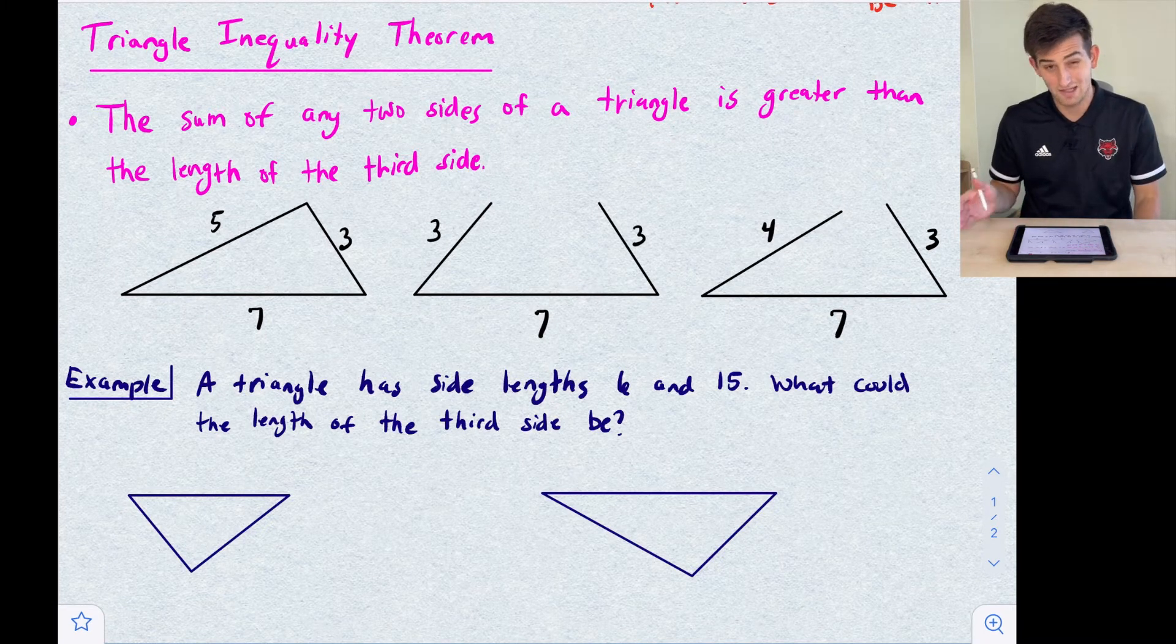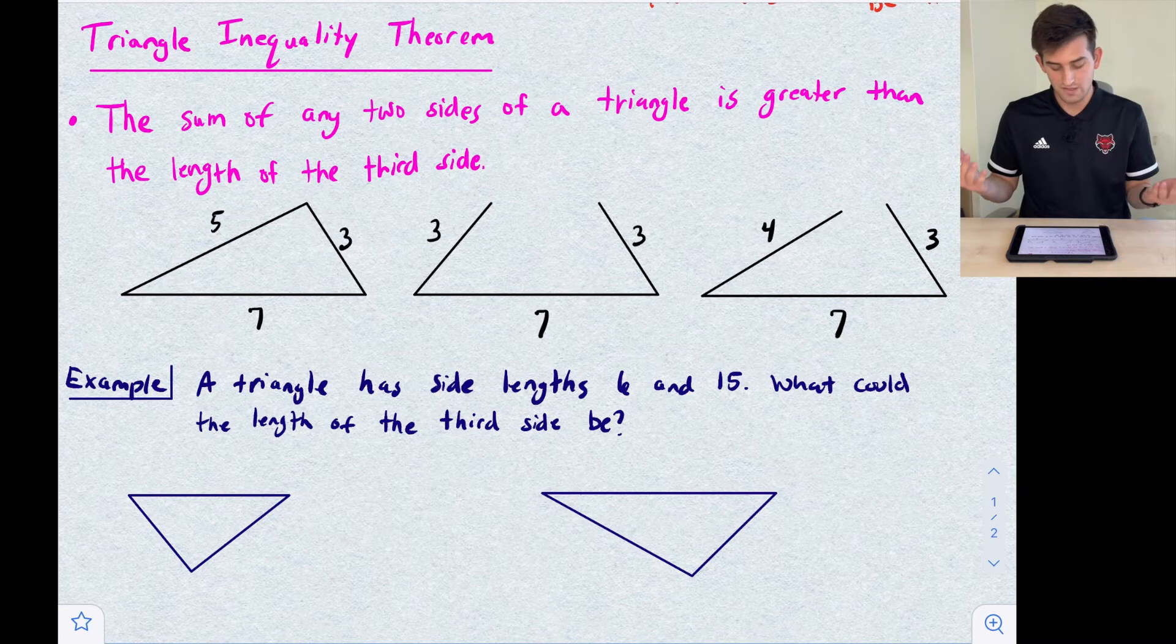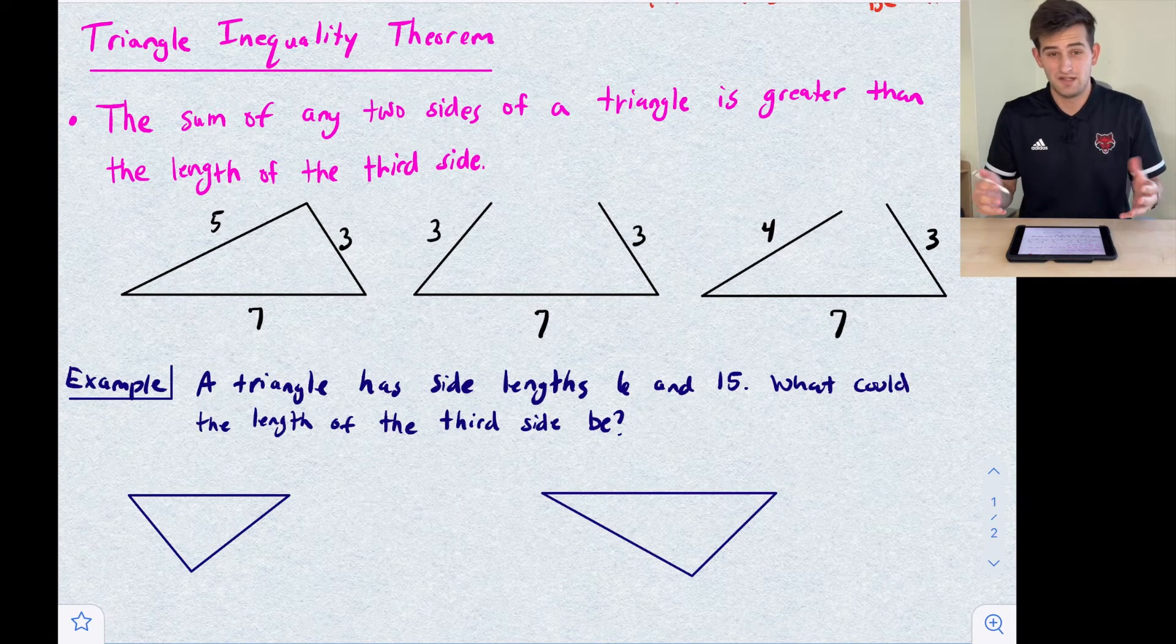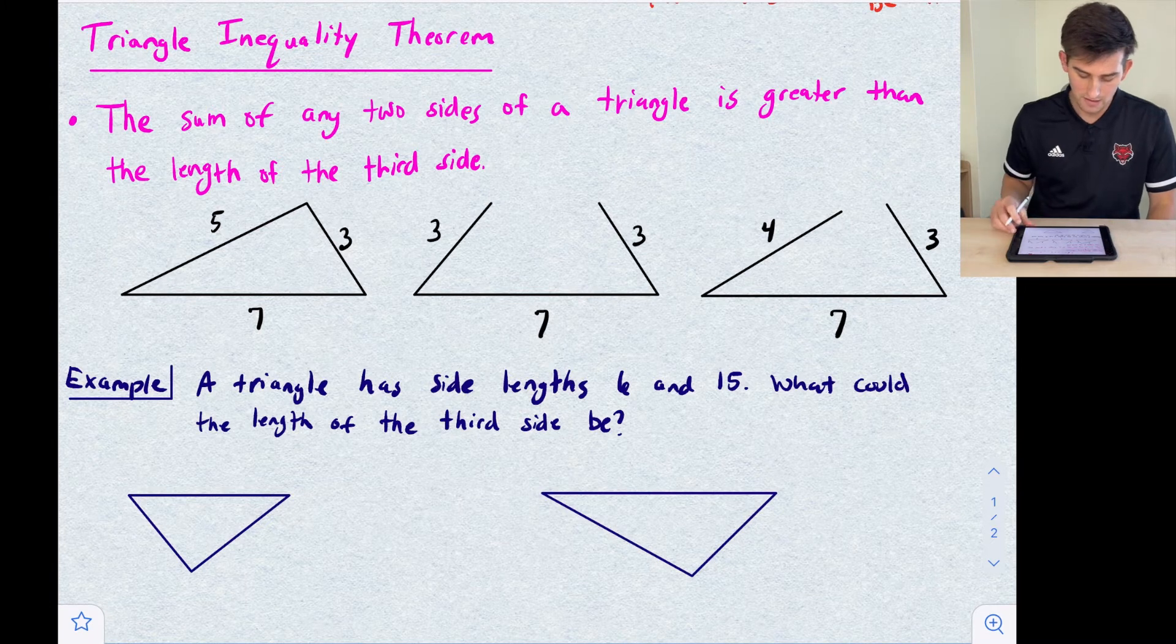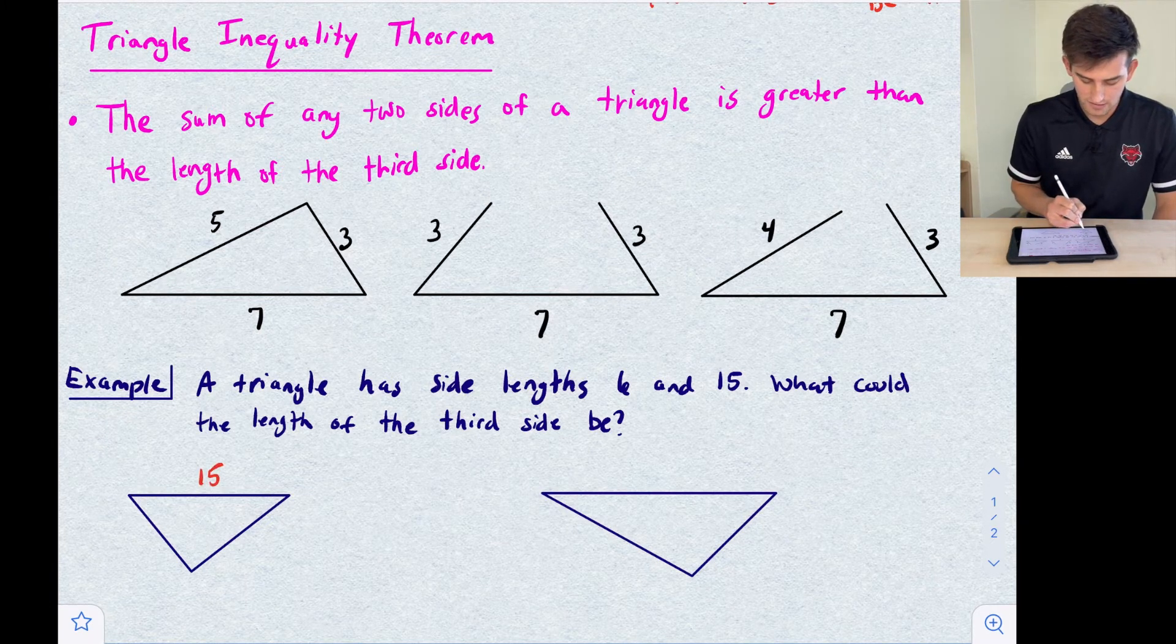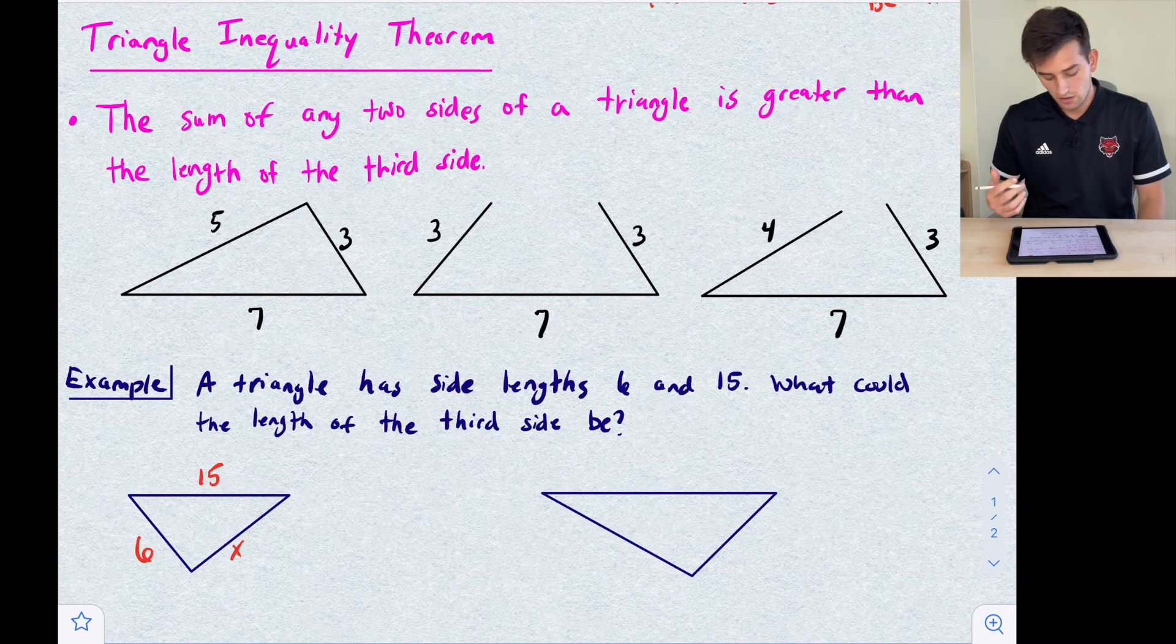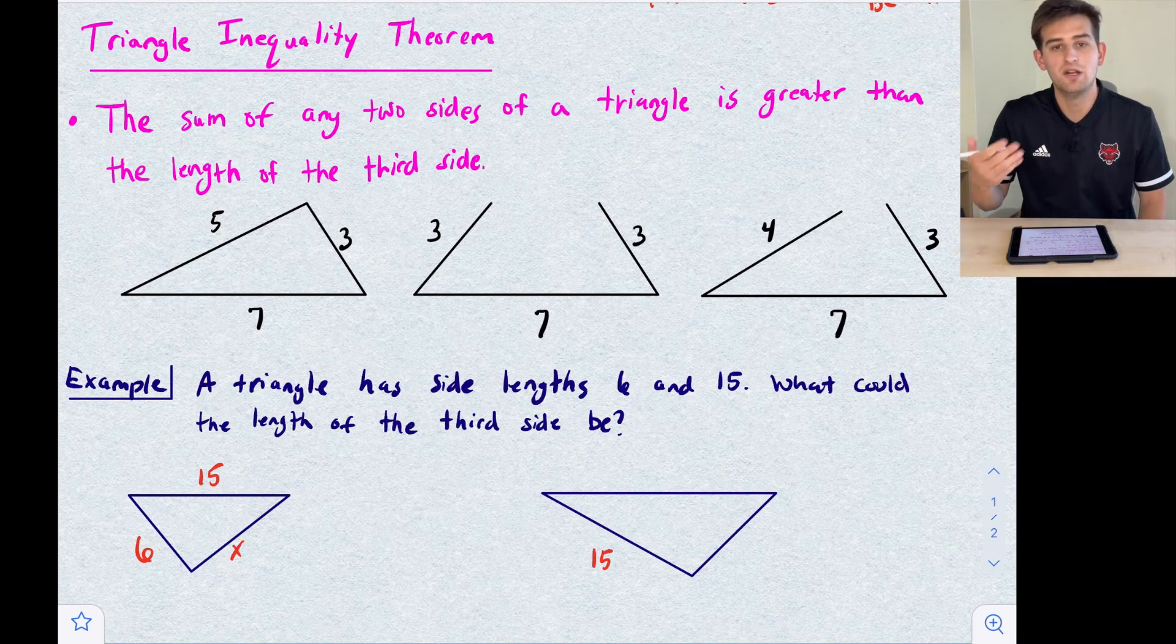Let's look at an example. A triangle has side lengths 6 and 15. What could the length of the third side be? They don't tell us if 15 is the longest side, so we have to account for two examples here. We could say 15 is the longest side, so let's say 6 is one of our sides and we don't know the other side. Also, 15 could be maybe our middle side, not our longest side. So we'd have to find the longest side and we know the other side would be 6.